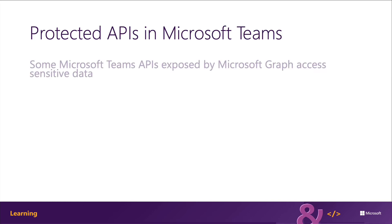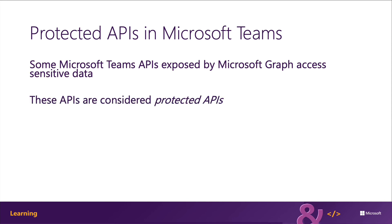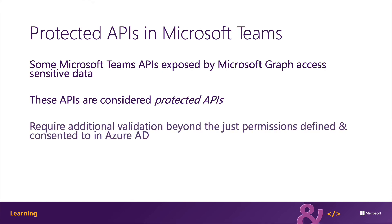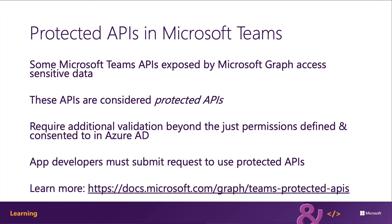Some APIs related to Microsoft Teams exposed by Microsoft Graph access sensitive data. These are considered protected APIs, and they require more validation beyond the typical permissions and consent other APIs require. In order for your app to use one of these protected APIs, you must submit a request to Microsoft for review. You can learn more about the protected APIs, including which APIs are on this list and the review process, from the Microsoft Graph documentation link shown on the slide.